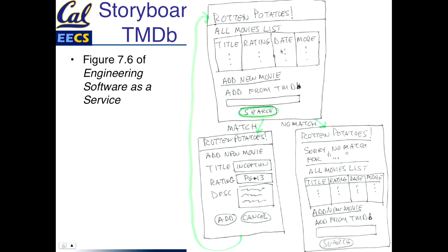Here's my lo-fi UI for the Rotten Potatoes home page. We added 'Add a new movie from TMDB' and here's the search button. In the happy path — we find the movie — it fills in Inception and all the information you want, and you click Add and go back. In the sad path, where it doesn't match, you get a message: 'Nope, sorry, I couldn't find it,' and you can try again and search again. That's the happy path, sad path, and the user interface we're going to build.